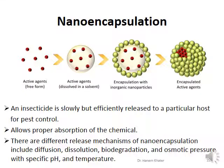Nano-encapsulation: an insecticide is slowly but efficiently released to a particular host for pest control, allowing proper absorption of the chemical. There are several release mechanisms of nano-encapsulation, like diffusion, dissolution, biodegradation, and osmotic pressure with specific pH and temperature.